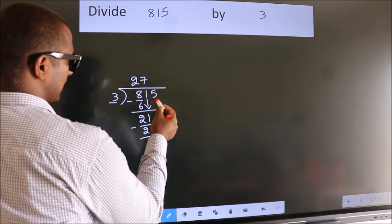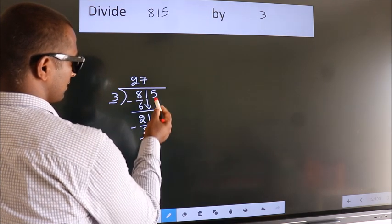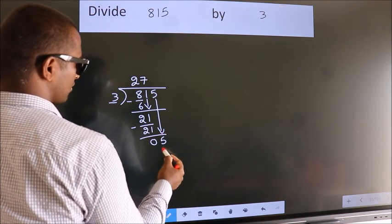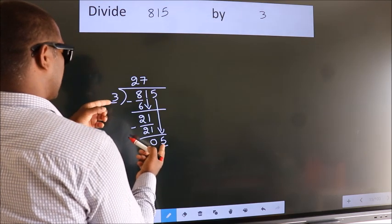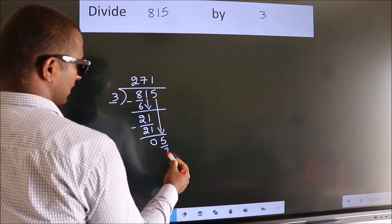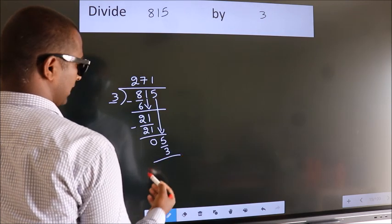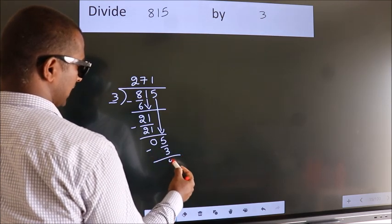After this, bring down the beside number. So 5 down, so 5. A number close to 5 in 3 table is 3 ones, 3. Now we subtract. We get 2.